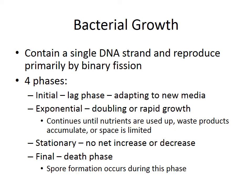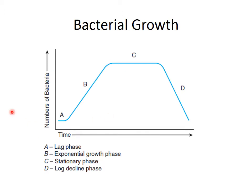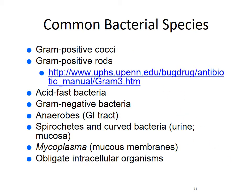Exponential growth continues until nutrients are used up, waste products accumulate, or space is limited. Then we have a stationary phase, where numbers aren't going up or down. Finally, there's the death phase, when spores form to help bacteria survive less-than-ideal conditions. Here's the graph: lag phase, then exponential growth, then stationary phase, then log decline — and those able to do so will form endospores.